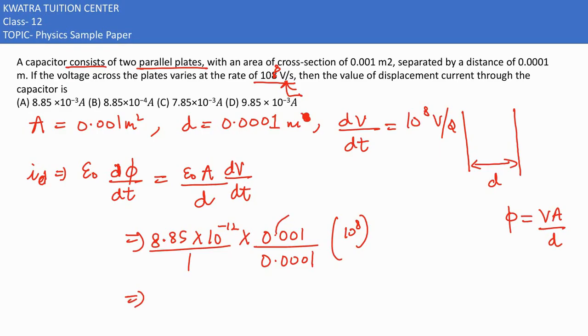So here we have how many zeros, 3 zeros. Similarly here we have 4. You can remove 3 zeros with zeros. So you are now left with 8.85 into 10 to the power minus 12 and 10 to the power 8. And 10 to the power 1 is there, so this would form 10 to the power 9.